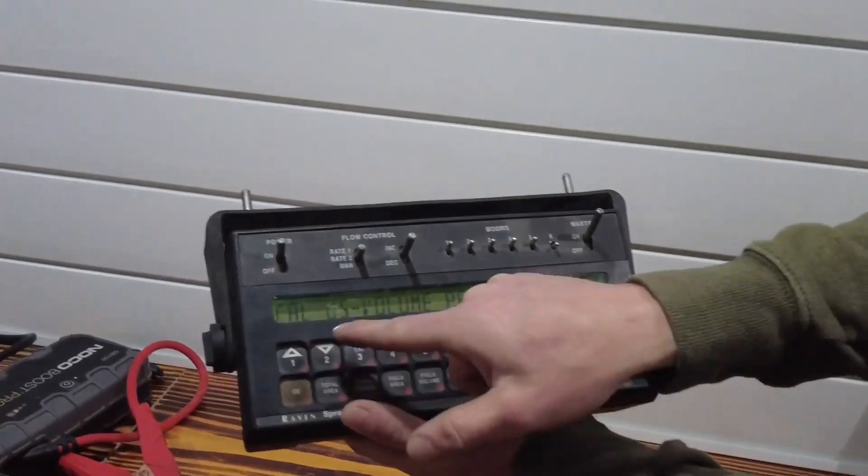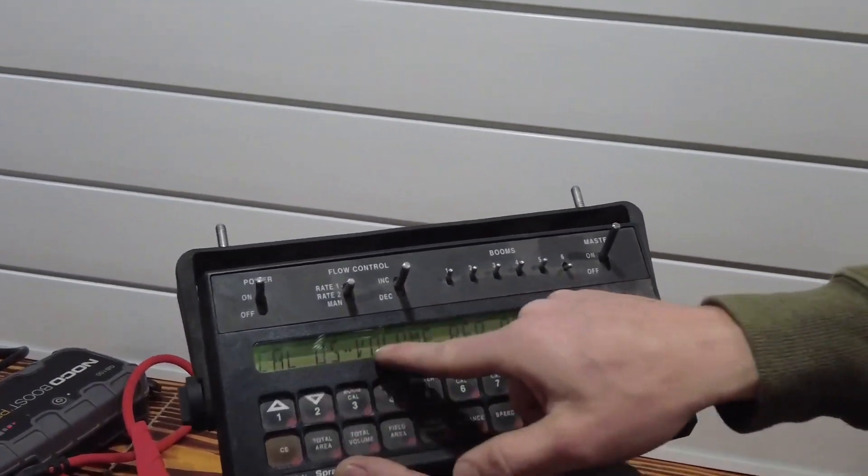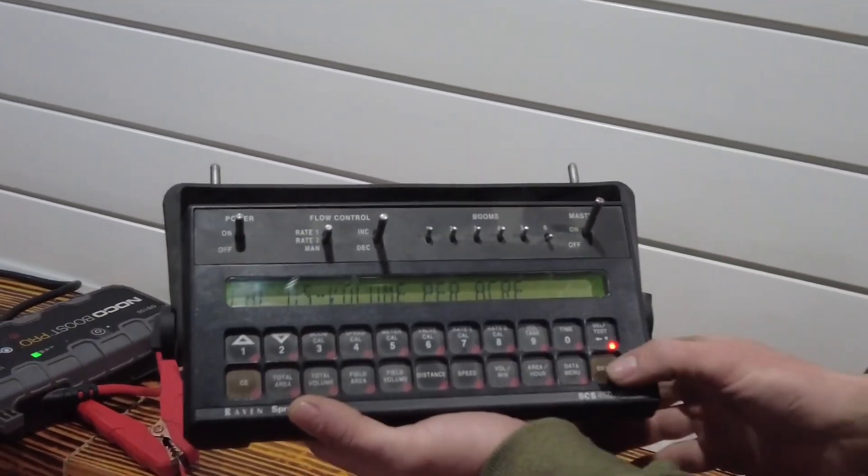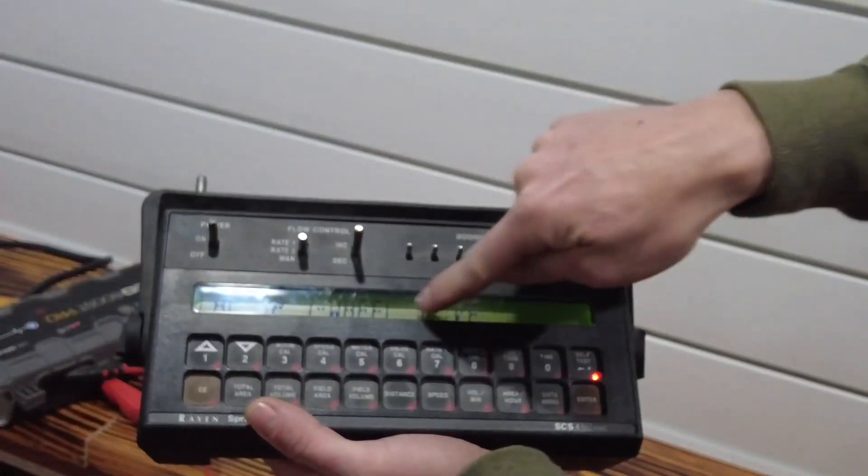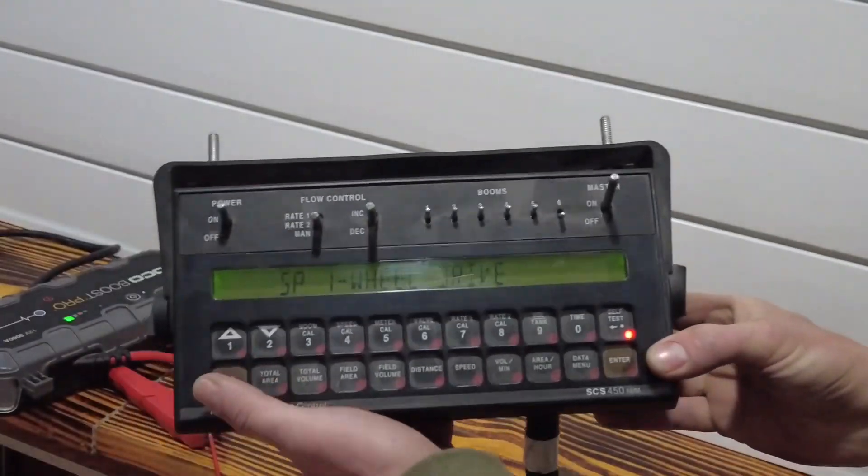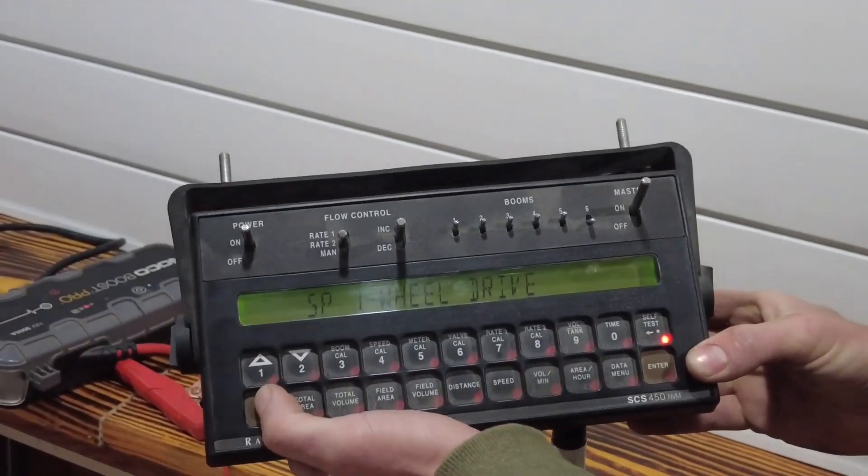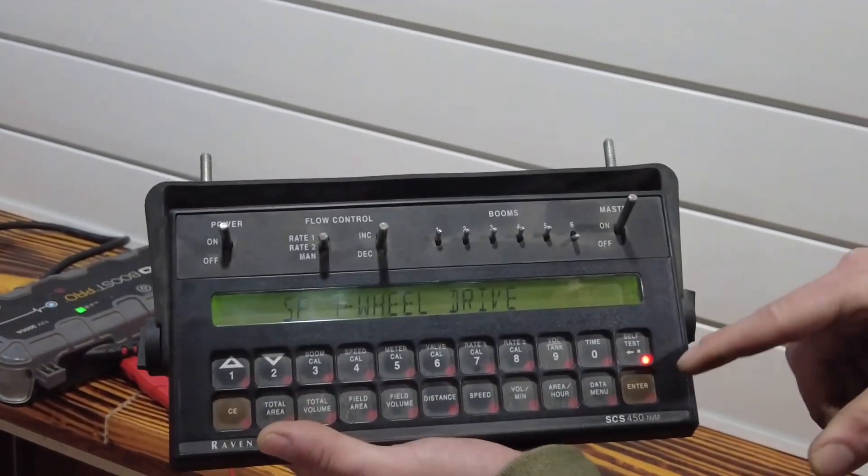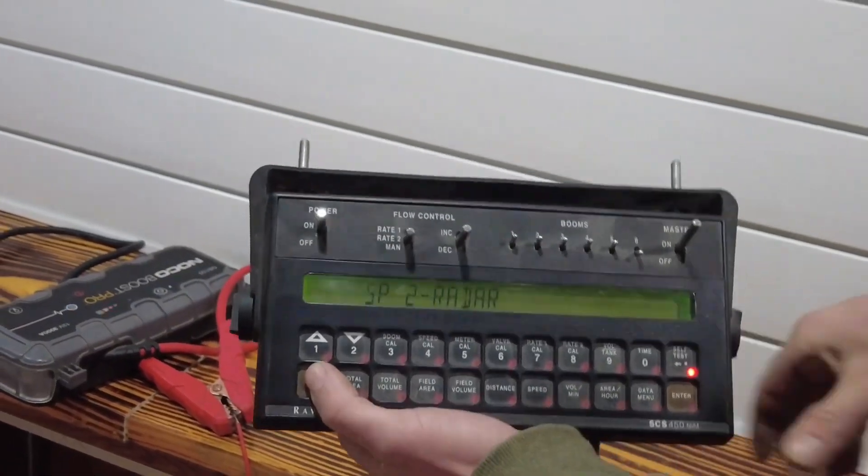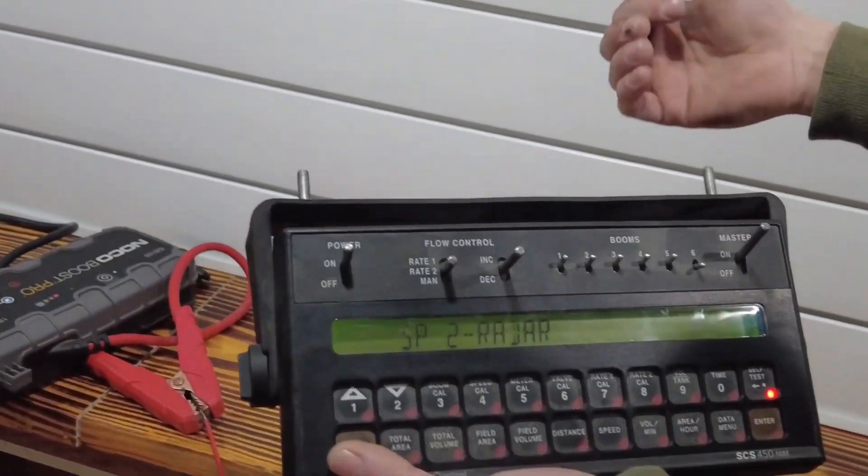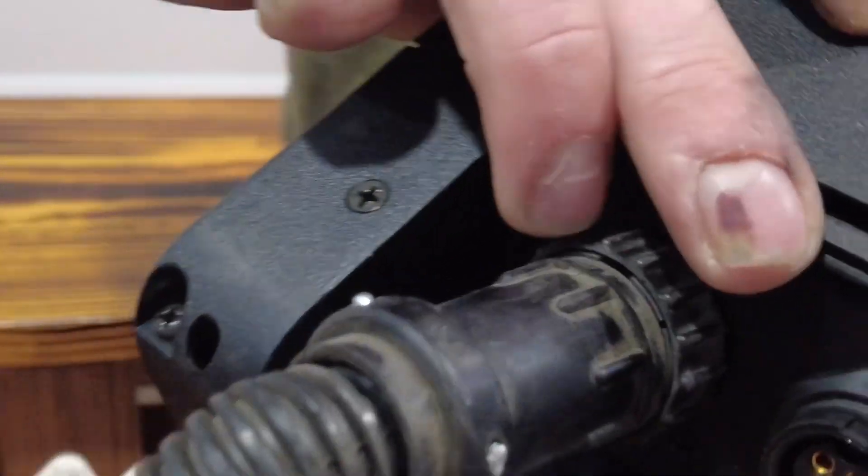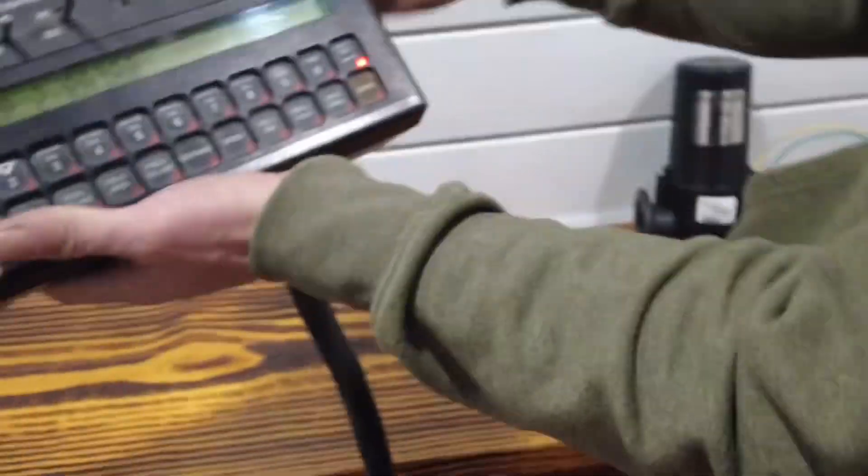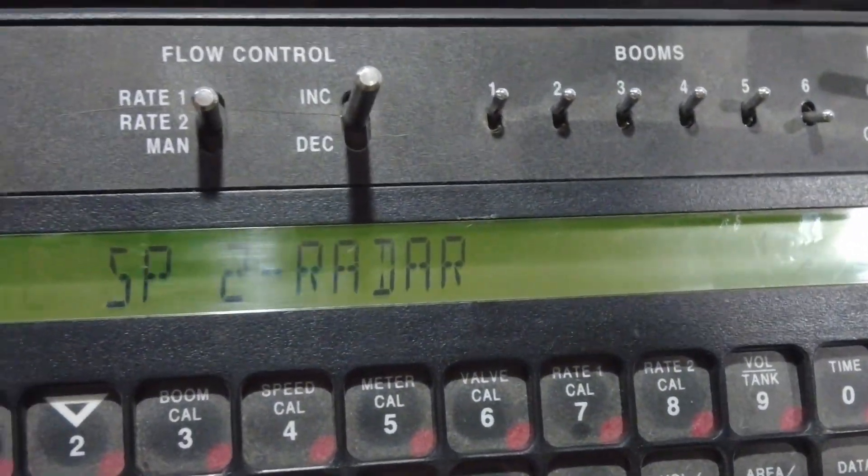So we're going to start off. US volume per acre? Yes. Enter is basically the yes button. So what kind of speed source do we have? You scroll with the CE button through our options and you select with enter. I've got a radar because I'm going to use an Astro hockey puck sensor that plugs right into my 3-pin right there on the back. Radar is what I'm using so I'm going to hit enter.